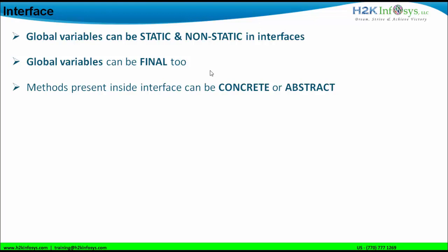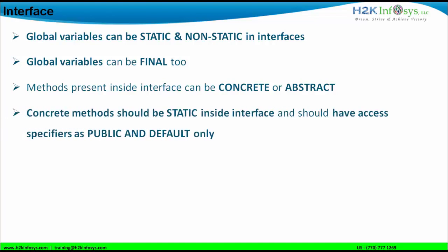An interface can also have concrete methods apart from abstract methods, and these concrete methods should be static — non-static concrete methods are not allowed. Concrete methods should have access specifiers of public and default only; protected and private are not allowed. These concrete methods are to be used in the class implementing the interface without overriding them. They cannot be overridden; they must be used based on the static and non-static behavior of the concrete methods.